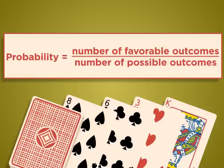Probability equals the number of favorable outcomes divided by the number of possible outcomes.